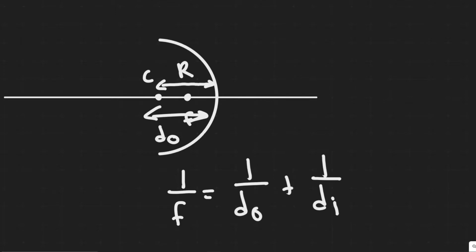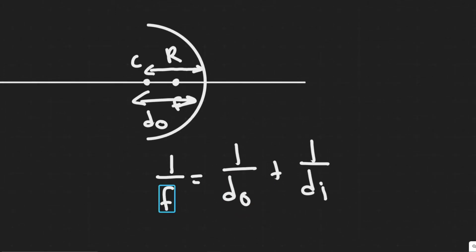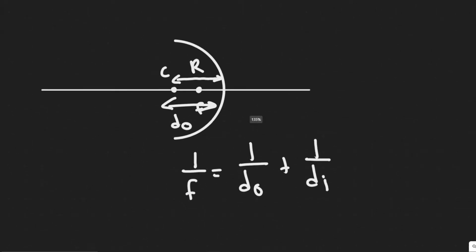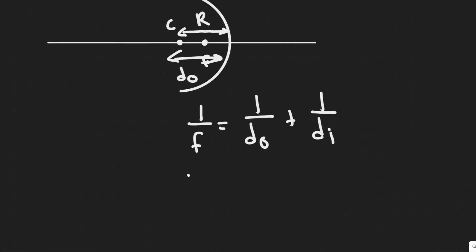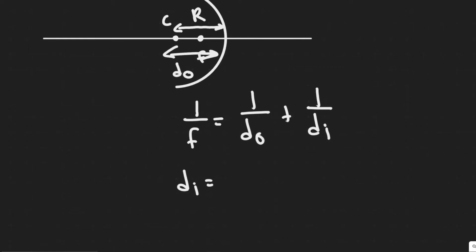To find d₀, we're going to need the focal length and the image distance. The easiest one is the image distance. They tell us in the problem that the image is to be at infinity, so the image distance is just going to be equal to infinity. We're just assuming it's infinitely far away.